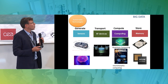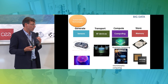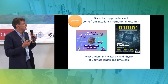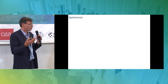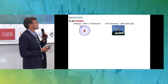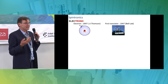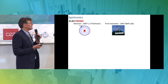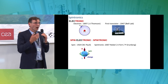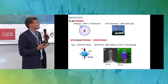If we want a disruptive approach, the key message is that we need excellent international research. The field I'm working on is Spintronic. You all know about electronics — electronics basically uses electrons with their mass and charge. The existence of the electron was known in 1897, and the first transistors came 50 years later. Spintronic uses one more quantum property, which is the spin, discovered in 1924, and the Nobel Prize was given in 2007.